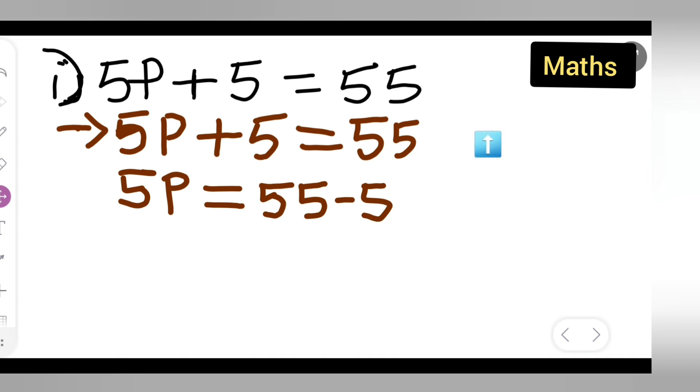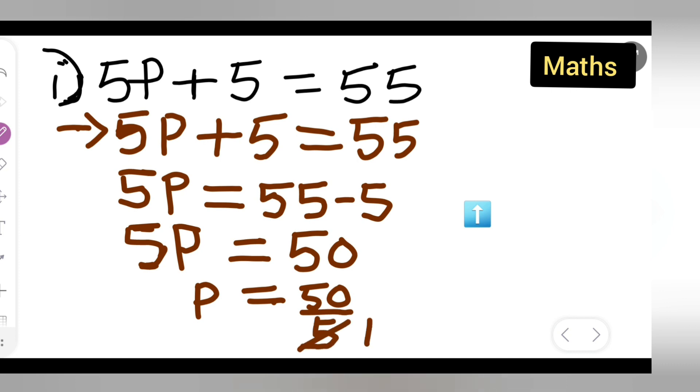The next step is 5p equals... Now you'll have to subtract 55 minus 5, which is 50. So your p equals 50 upon 5. 5 ones are 5, 5 tens are 50, so therefore the value of p equals